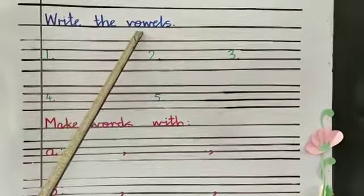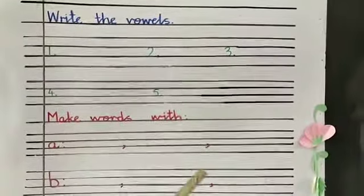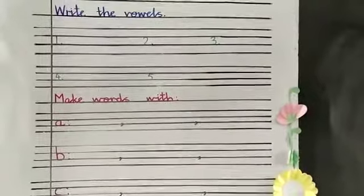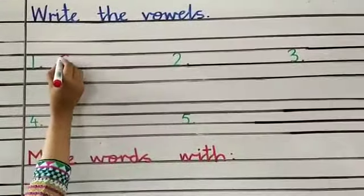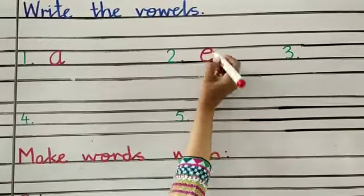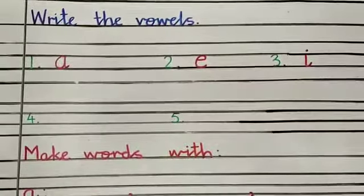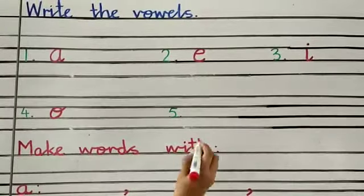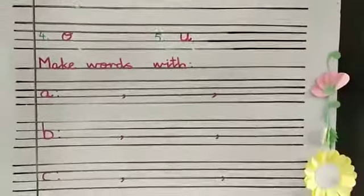V, O, W, E, L, S — vowels. Write the vowels. Let's revise the vowels: A, E, I, O, U — these are vowels. In front of number one, write A. The second vowel — E. The next one — I, and put the dot of I. Come to the next line. The next vowel is O, and the last one is U. A, E, I, O, U. Have you done this work? Come to the next question.